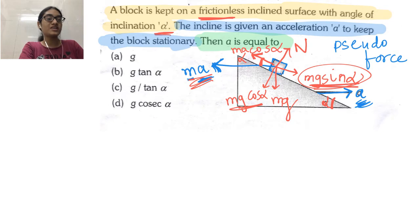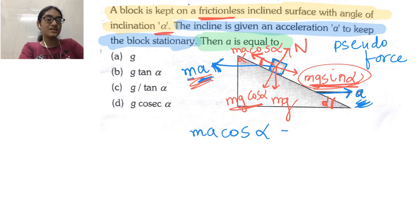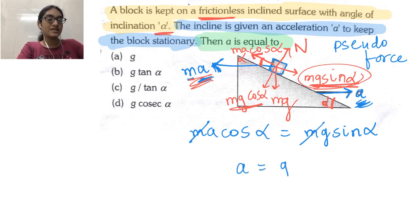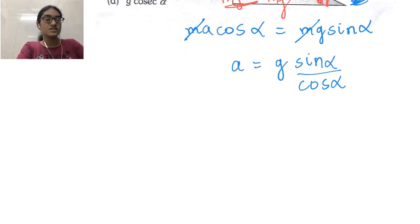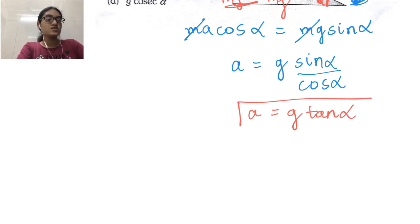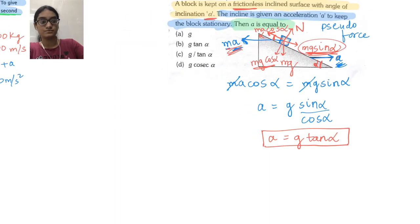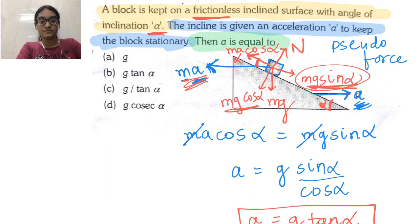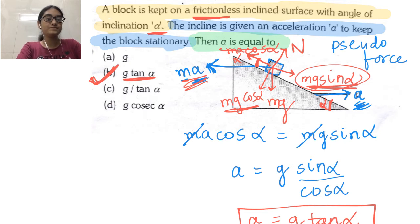Since the block is stationary, these two forces are equal: MA cos alpha equals MG sin alpha. M cancels out, giving A equals G into sin alpha upon cos alpha, which equals G tan alpha. So A equals G tan alpha, which is the second option - the correct answer.